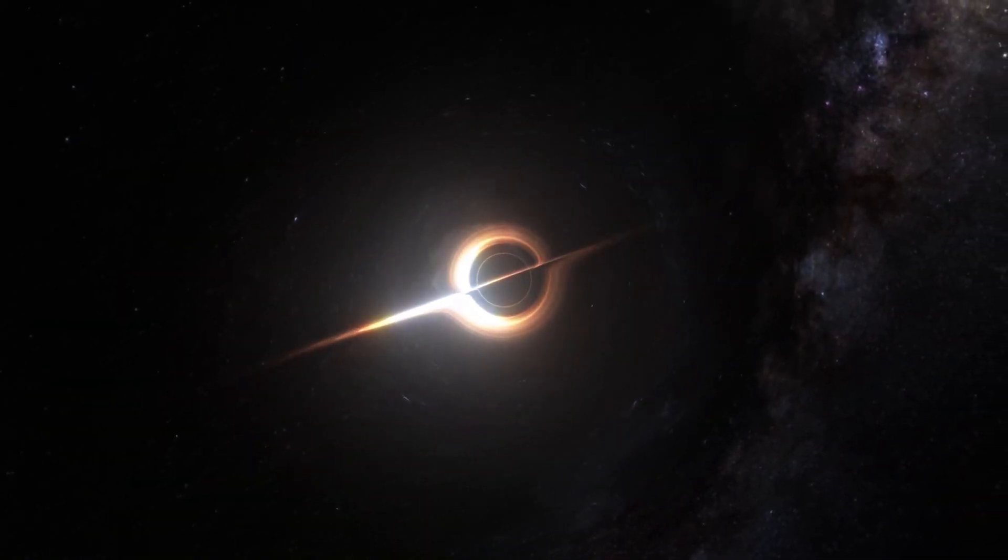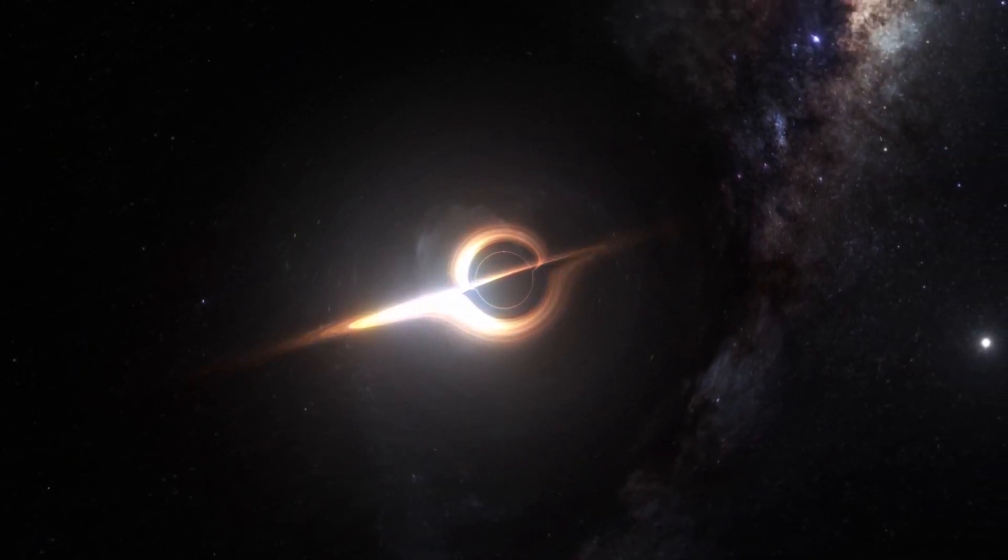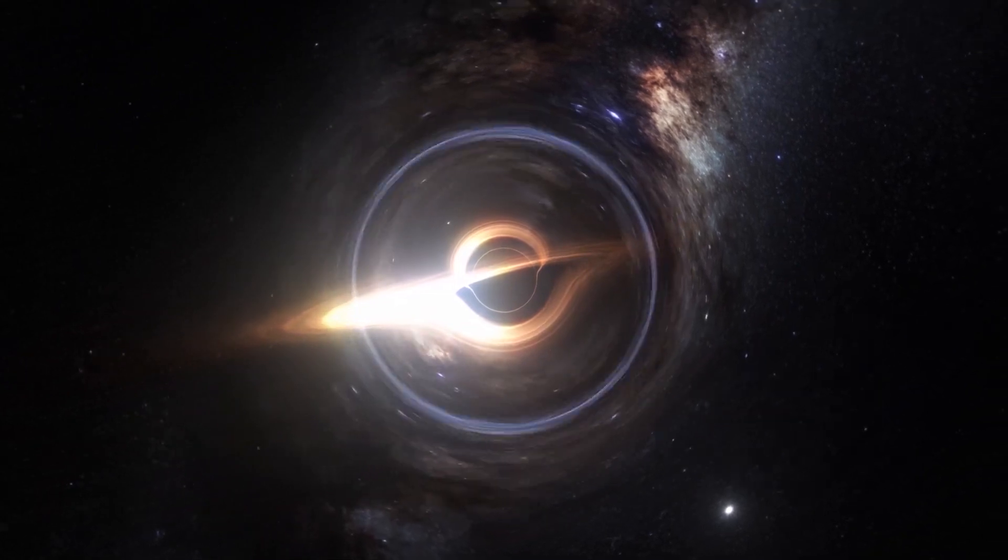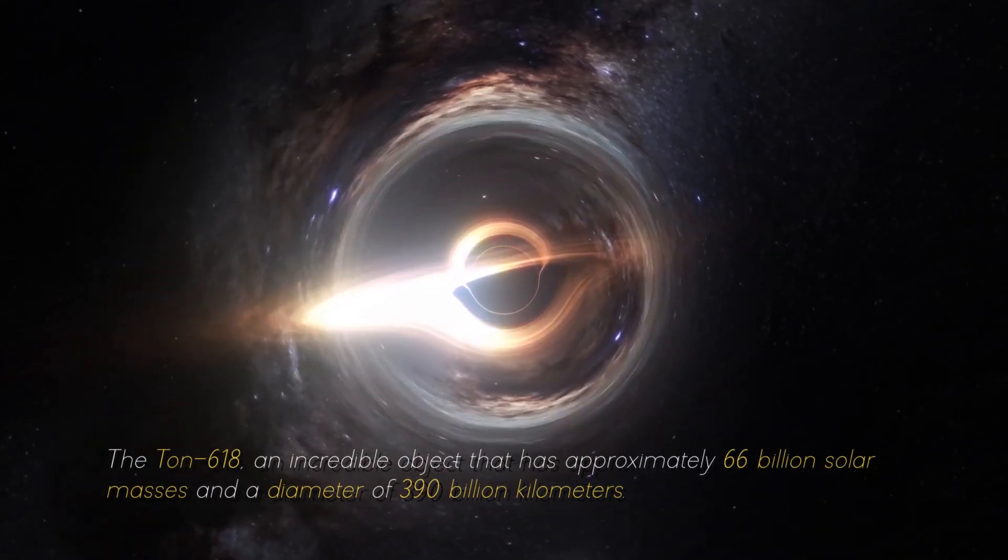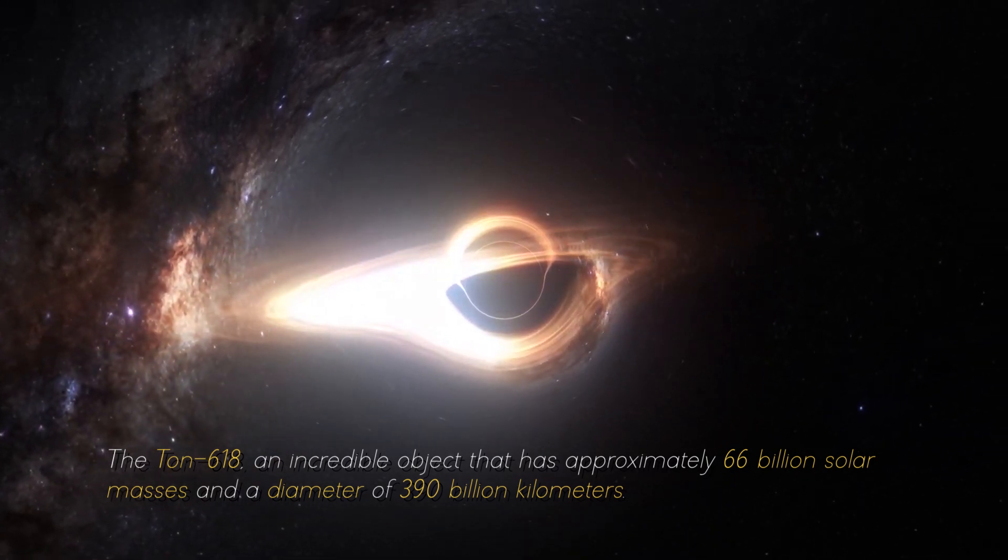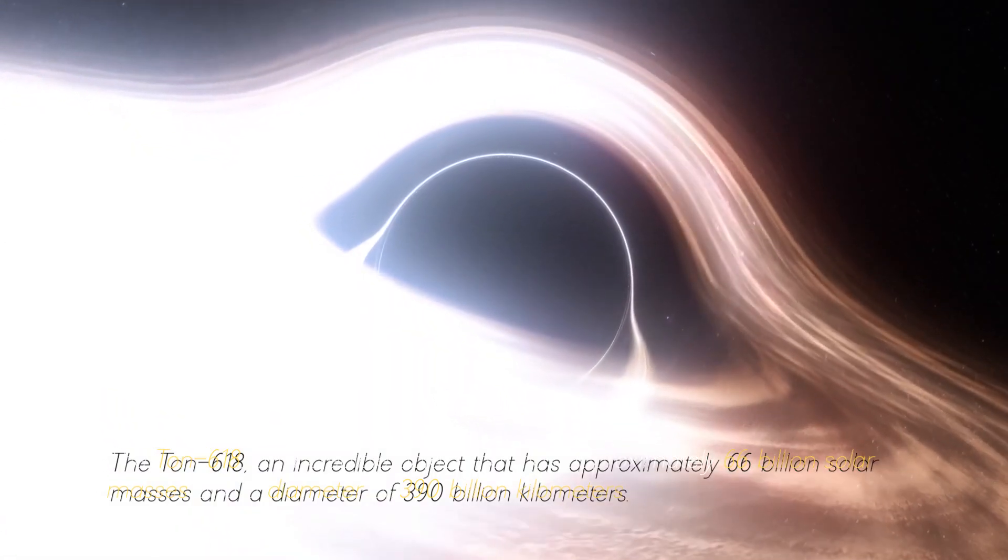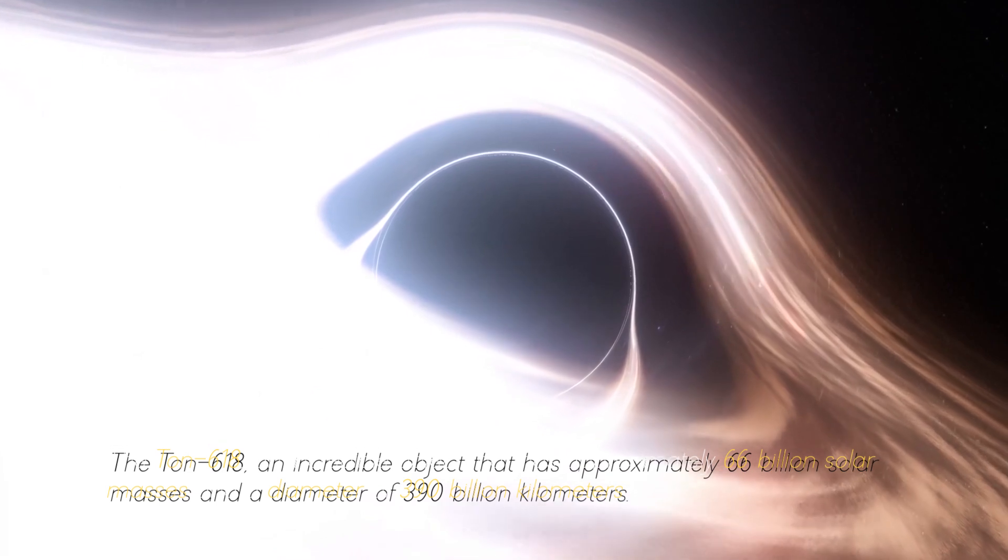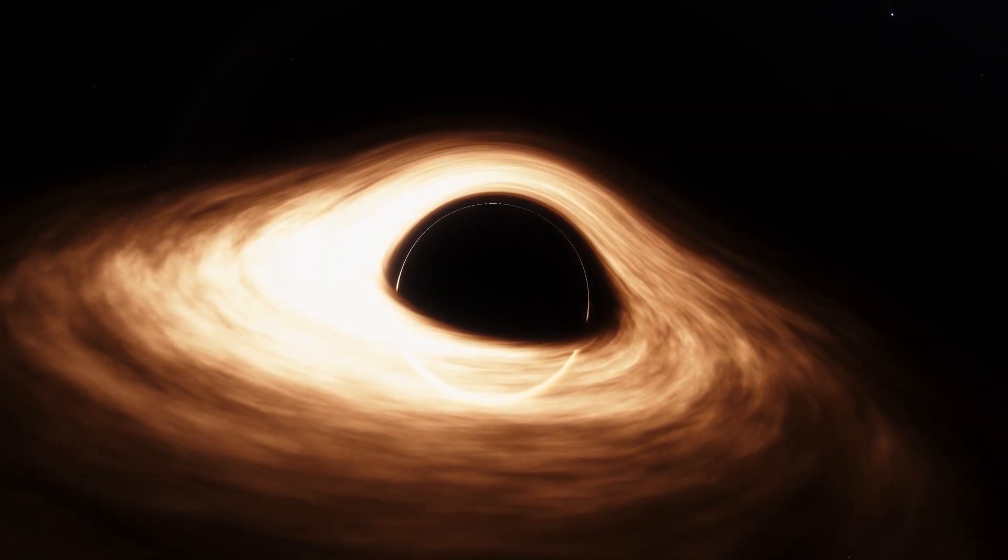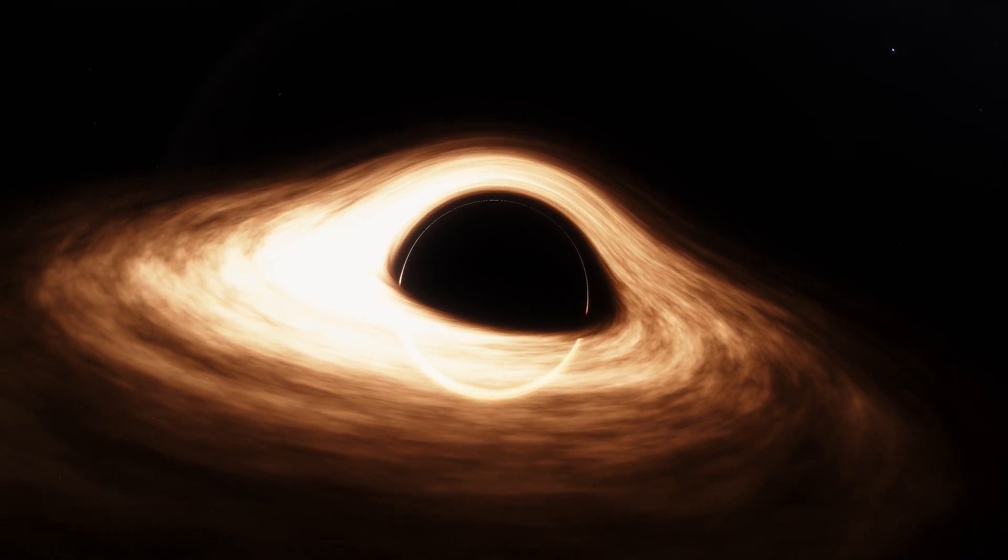Not everything ends here. This star cannot be compared with the most massive black hole in our cosmos, the Ton 618, an incredible object that has approximately 600 billion solar masses and a diameter of 390 billion kilometers. For now, we will stop measuring in kilometers and start measuring in light years.